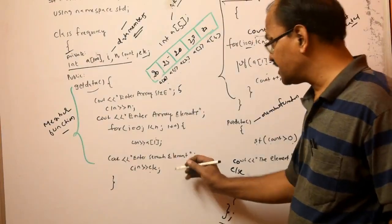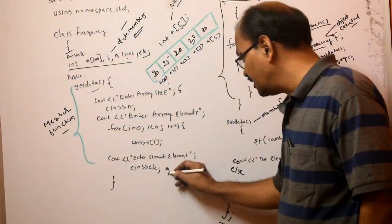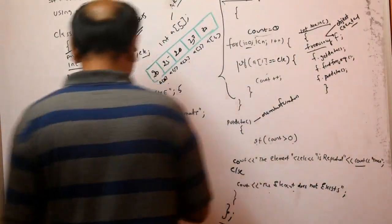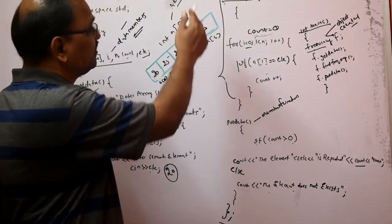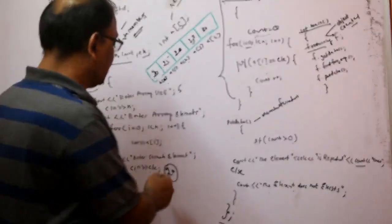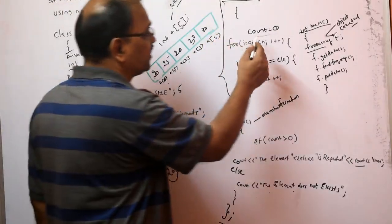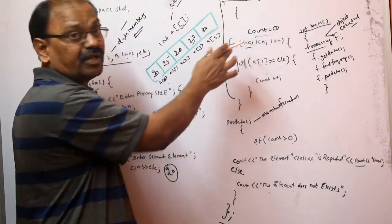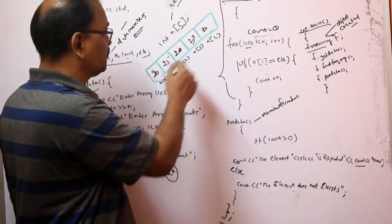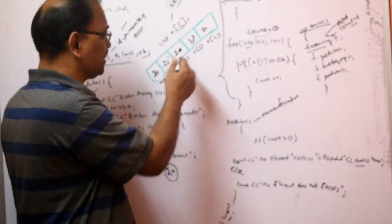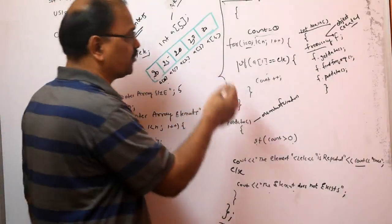Next I enter the search element — I enter 20 as the search element. getData is one member function, findFrequency is another member function, and putData is another member function. Now we have entered the element 20. By seeing the array we can say 20 is repeating 3 times, but we will run the program to see how it works.